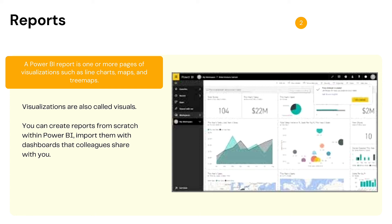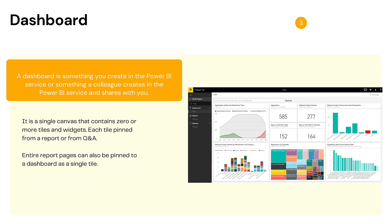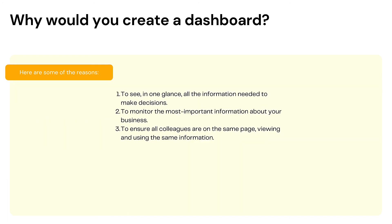A report can include a line chart, a map, or a tree map. A dashboard is something you create in Power BI Service — it's pins from different reports you want to pay attention to, all in one place. You would create a dashboard when you want to keep an eye on important information, need it to support a decision, or simply want to bring together things you're monitoring.